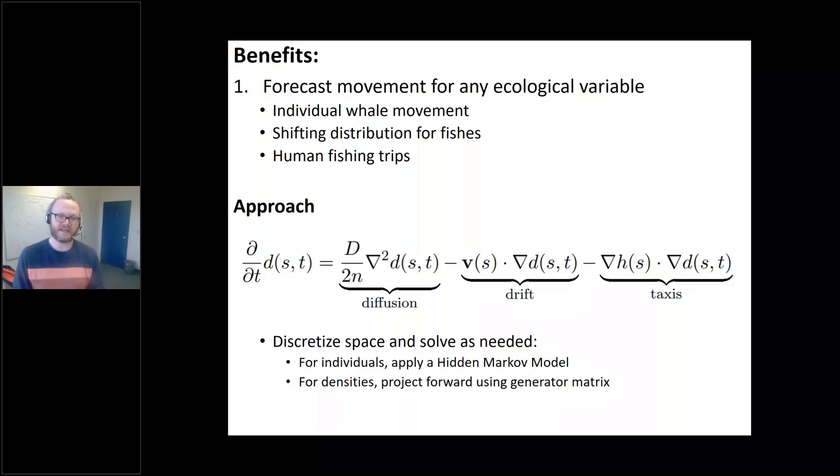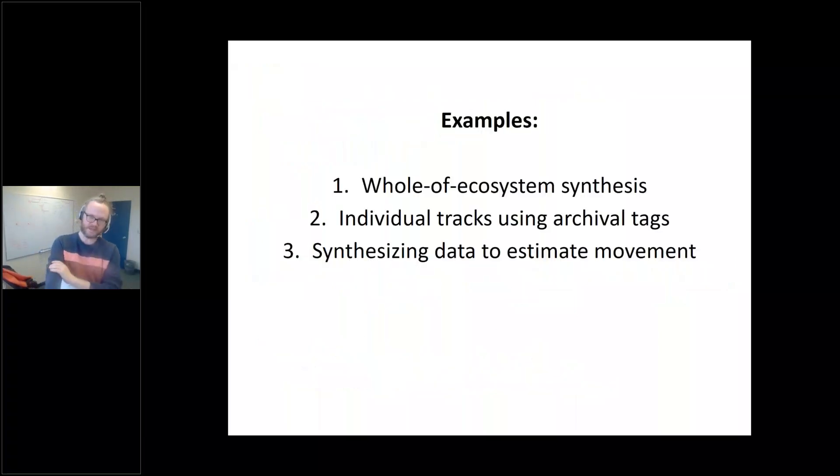My goal is to really embed this discussion of movement in the classic physics of partial differential equations. There's this partial differential equation for a density field across space and time. That's changing under three concepts: diffusion or the random or unmodeled variation in location by individual; passive drift, like a vector field; and taxis, which is this tendency for animals to move towards their preferred habitat. These three concepts of diffusion, drift, and taxis that we want to model in continuous space and continuous time.